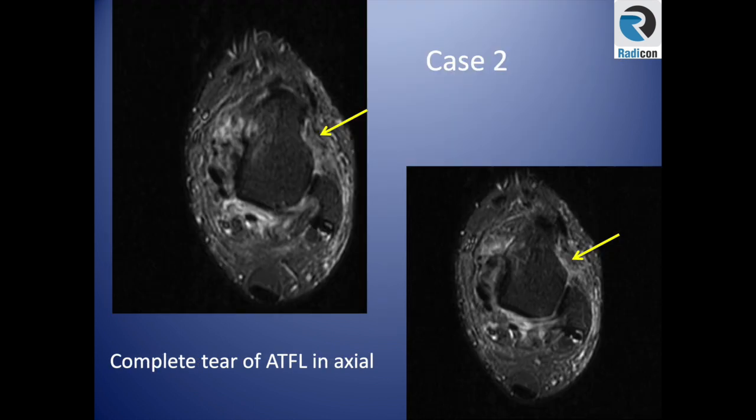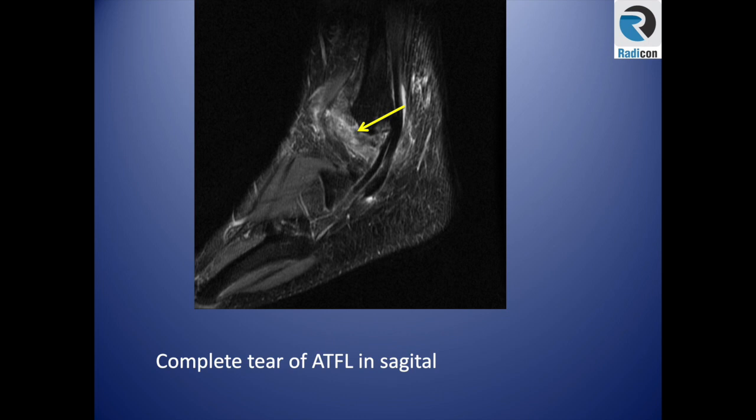Case two: axial images of the ankle at the level of the coma-shaped fibula, confirming we are at the anterior talofibular ligament level. There is complete absence of the ligament with a slight wavy appearance of the residual fibers and surrounding edema — another case of complete tear. On the sagittal plane, the band extending anteriorly is absent.